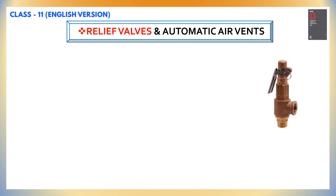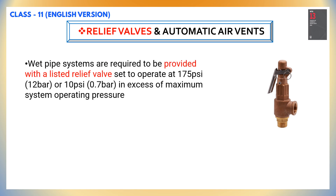Let's go through another system component: relief valves and automatic air vents. Please note that any system component shall be rated for the maximum system working pressure to which it is exposed, but shall not be rated at less than 175 psi for components installed above ground and 150 psi for components installed underground. Wet pipe systems are required to be provided with a listed relief valve set to operate at 175 psi or 10 psi in excess of the maximum system operating pressure. A relief valve is required to help prevent pressure buildup from exceeding the pressure rating of system components.